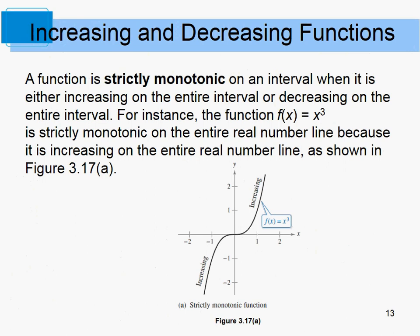A strictly monotonic function is one that is either always increasing or always decreasing on an interval. x³ is strictly monotonic because it's increasing on the entire real number line. What's the derivative of x³? It's 3x², which is always positive — so the function is always increasing.